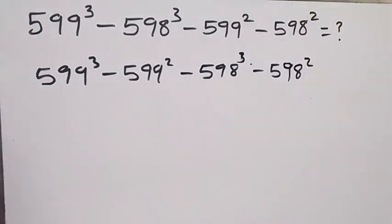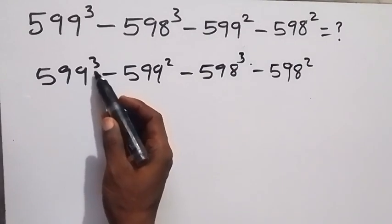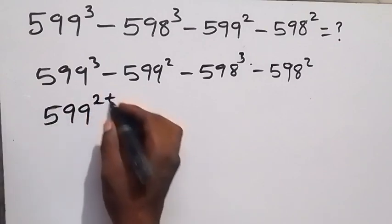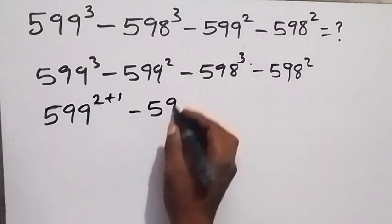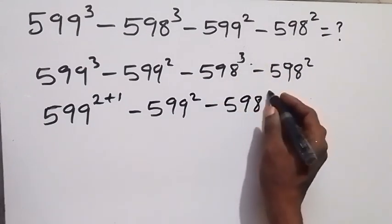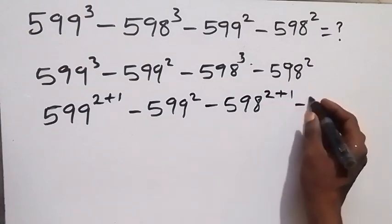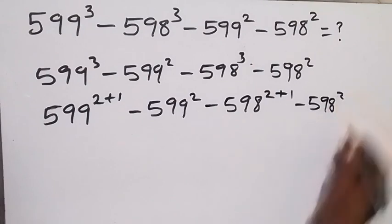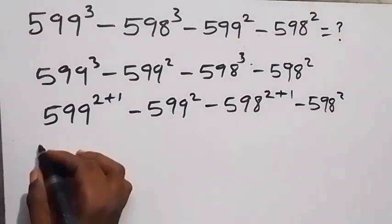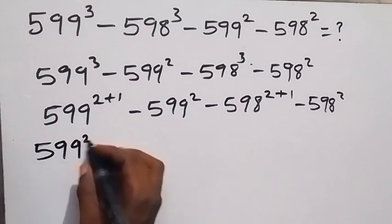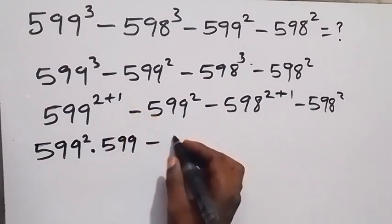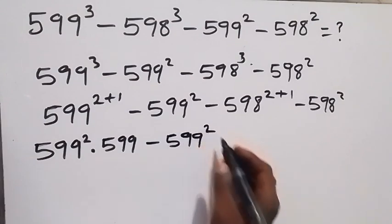In the next step we can rewrite the power of 3 as 2 plus 1. So we have 5^99 raised to the power 2 plus 1, then minus 5^99 squared. Similarly here we have minus 5^98 raised to the power 2 plus 1, then minus 5^98 squared. From the law of indices we can separate this, and it becomes 5^99 squared multiplied by 5^99 to the power 1, then minus 5^99 squared.